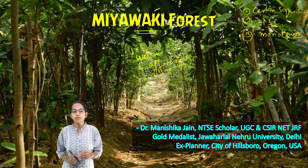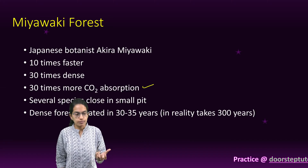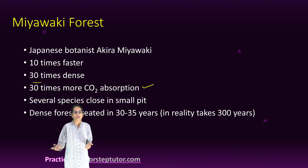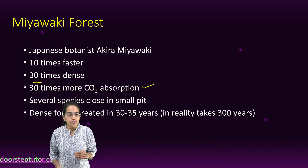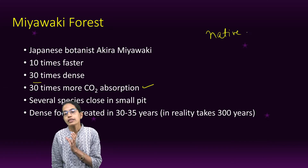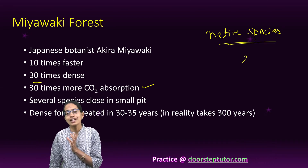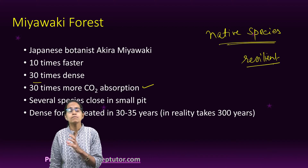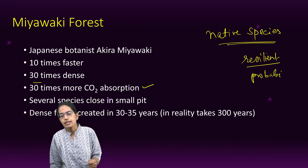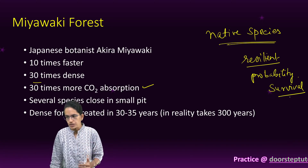This Miyawaki technique would increase carbon dioxide absorption by nearly 300 times, make the region nearly 30 times denser than a normal forest, and the growth rate of trees would be 10 times faster. Several species grown in a close area are mostly native species. The major benefit of native species is they are resilient to the atmosphere and climatic conditions of the region, so their probability of survival is higher.